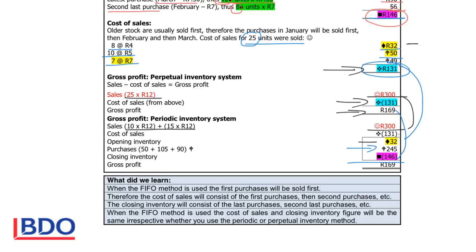So what did we learn today? When the FIFO method is used, first purchases will be sold first, and all purchases left over at the end of the year — the last purchases — will form part of the closing inventory. Because the first goods are sold first, the cost of sales will consist of your first, second, and third purchases. The closing inventory will consist of the last purchases, second last purchases, etc. When the FIFO method is used, the cost of sales and closing inventory figures will be the same irrespective of whether you use the periodic or perpetual inventory system.